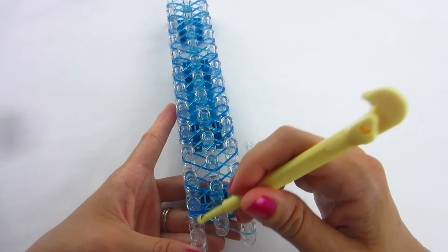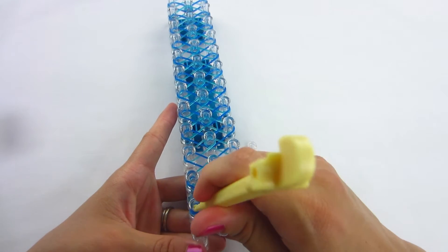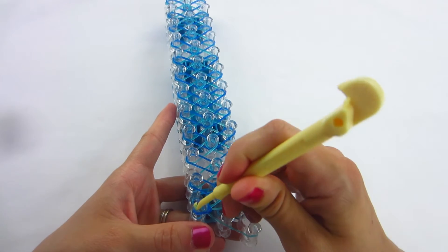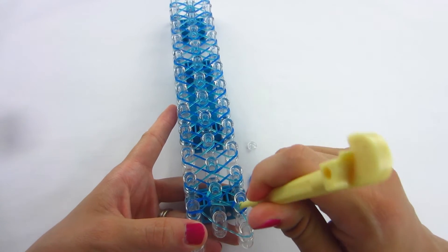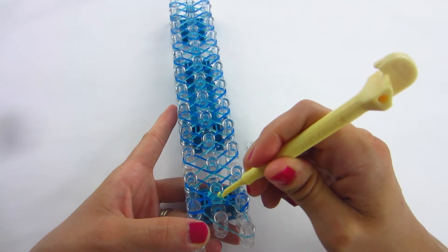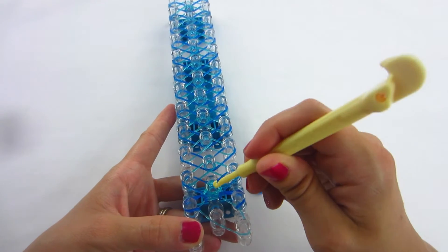Next you are going to go inside at that second to bottom left peg and grab your aqua band that is on the bottom. Bring it up and over to the middle, and then go over to the right and grab that aqua band and bring it to the center. Stay on that peg.